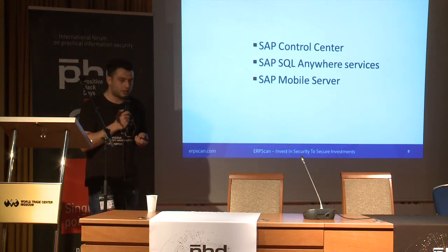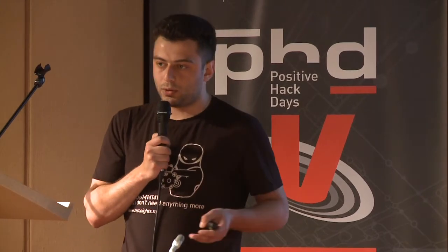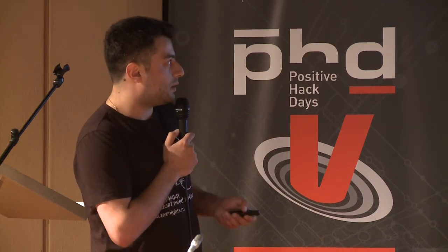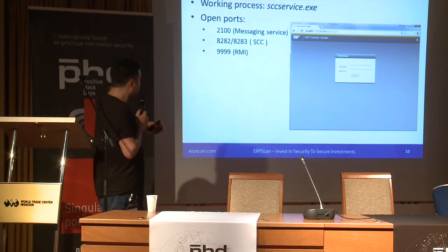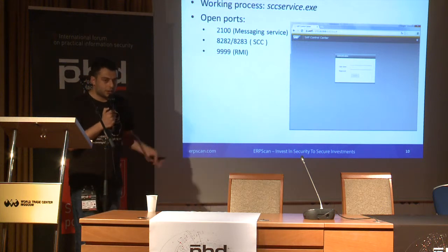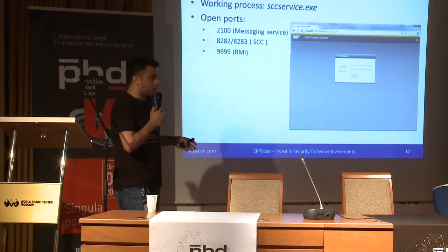SAP platform consists of three main services, the first of which is SAP Control Center. SAP Control Center represents a portal used by the admin to control SAP Mobile Platform. The working process is a CC service which has four main ports. Ports 2100 and 4999 are used inside these processes, and ports 8282 and 8283 are used for connections via HTTP protocol and transferring information to the portal. Port 8282 uses HTTP by default and redirects calls to HTTPS, which is located on port 8283.